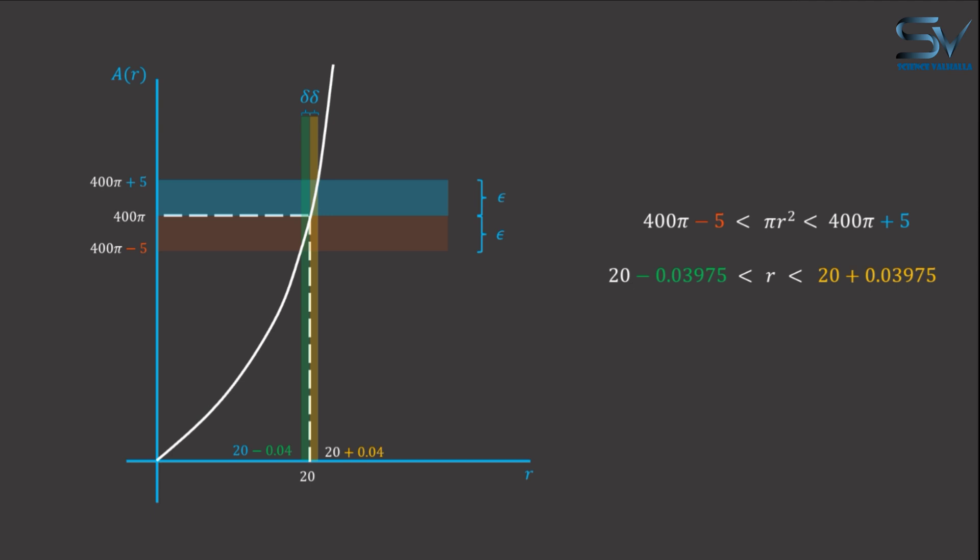Finally, we discovered that if we want the output to be within a certain error tolerance, we must control the input to be within a particular error tolerance.